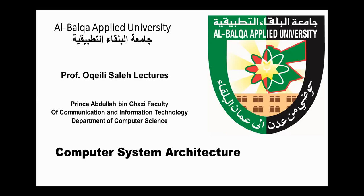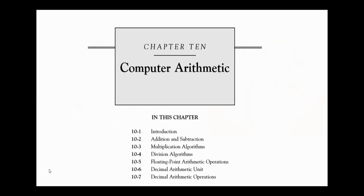Hello everyone, today we start chapter 10 on computer system architecture. Topics covered in this chapter are addition and subtraction using signed magnitude representation and two's complement representation, multiplication algorithms, division algorithms, floating point arithmetic operations, decimal arithmetic unit, and decimal arithmetic operations.